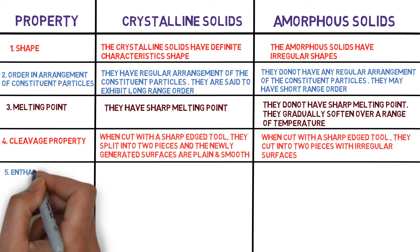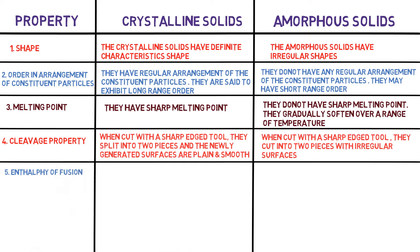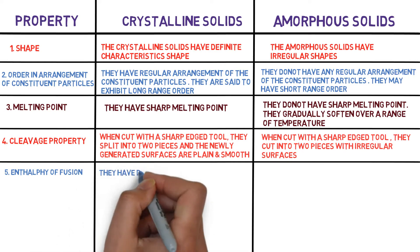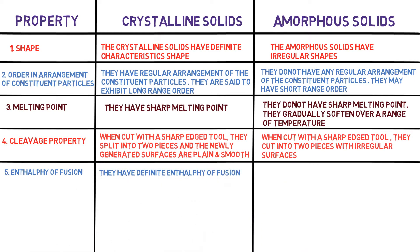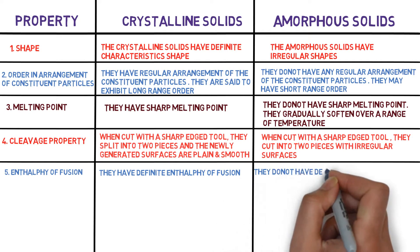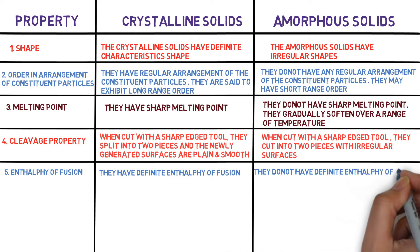The next property is enthalpy of fusion. Crystalline solids have a definite enthalpy of fusion, whereas amorphous solids do not have a definite enthalpy of fusion.